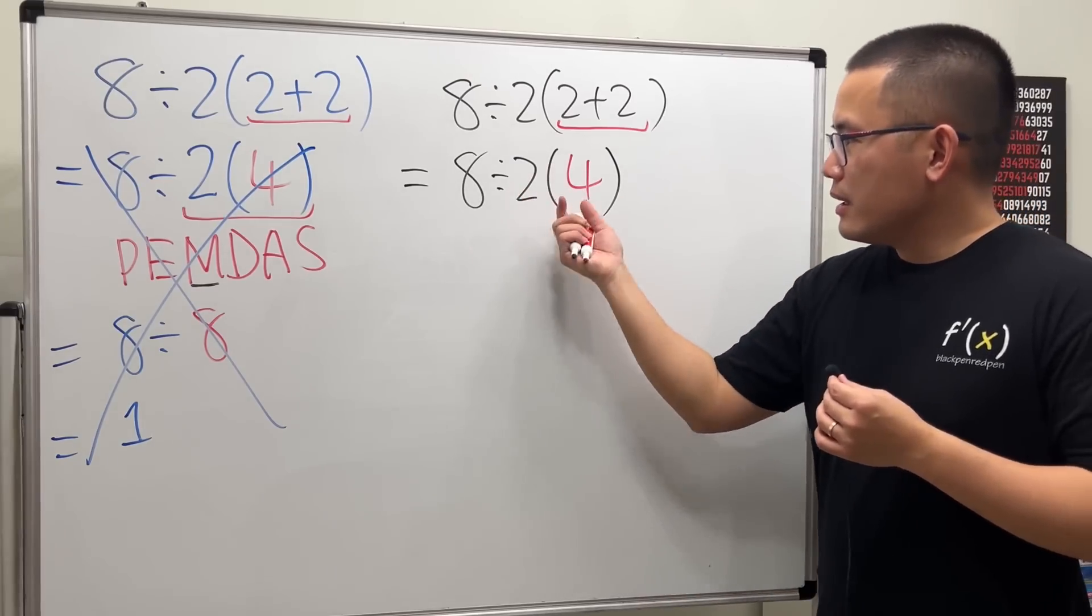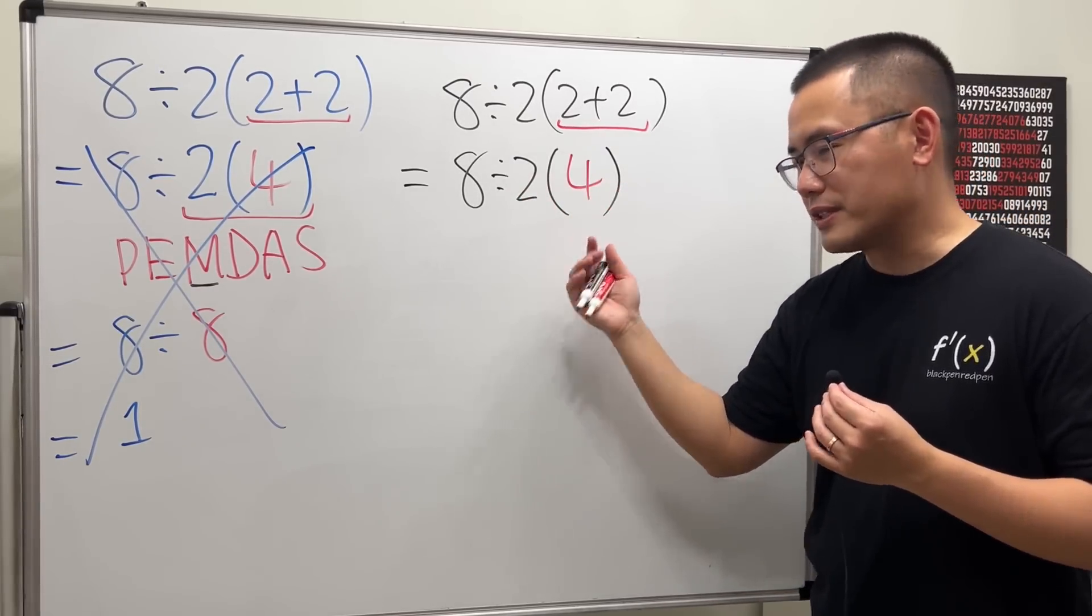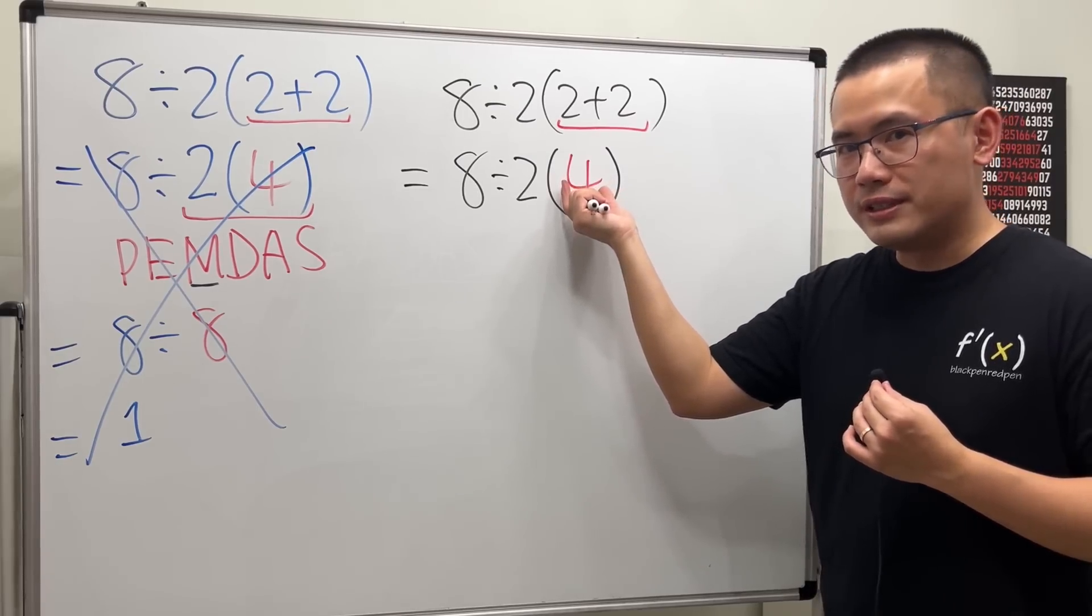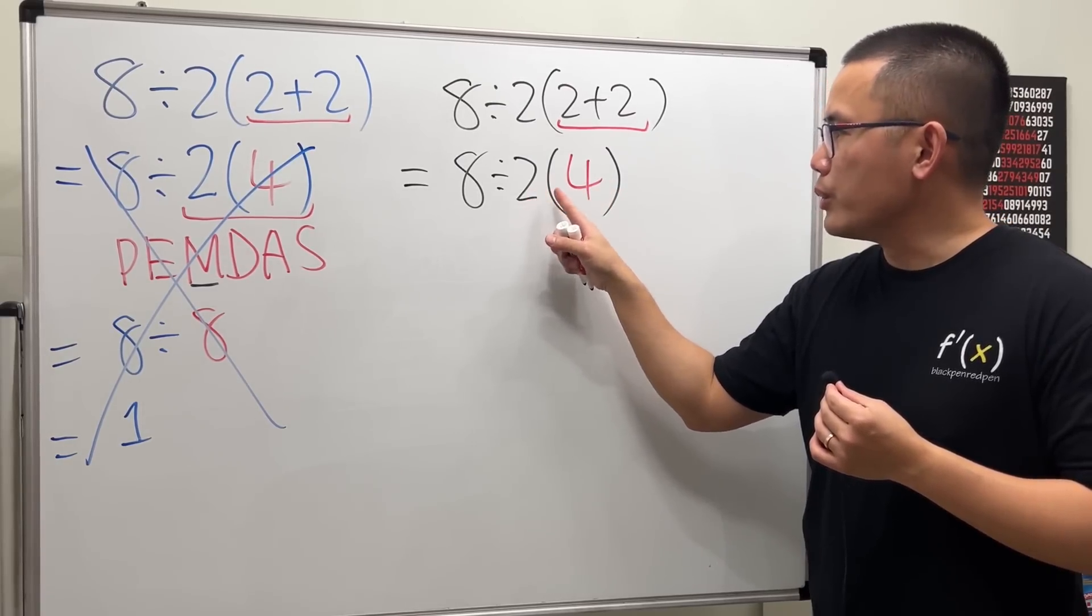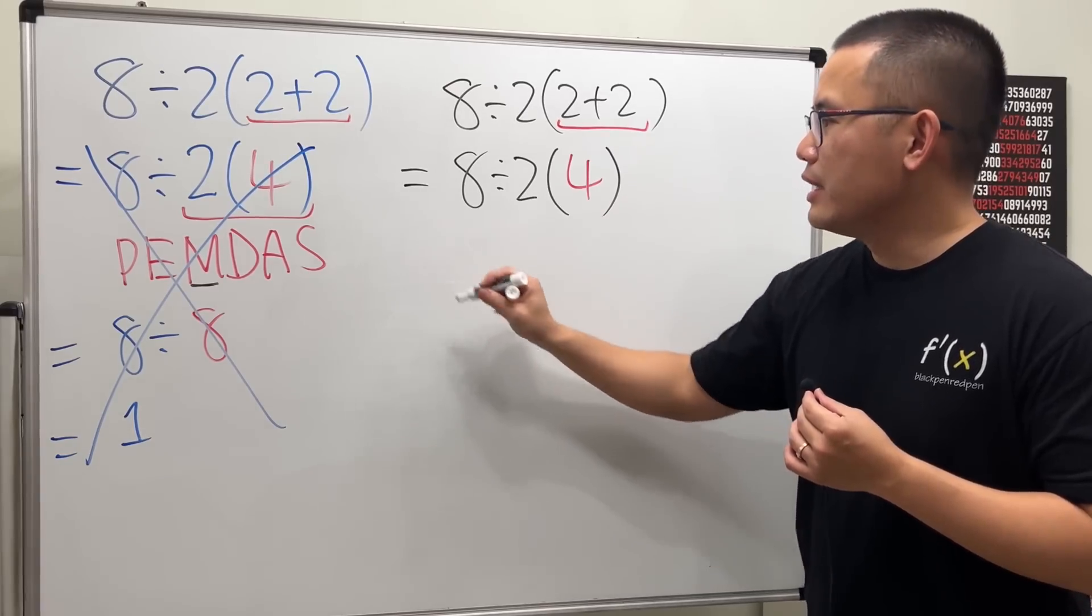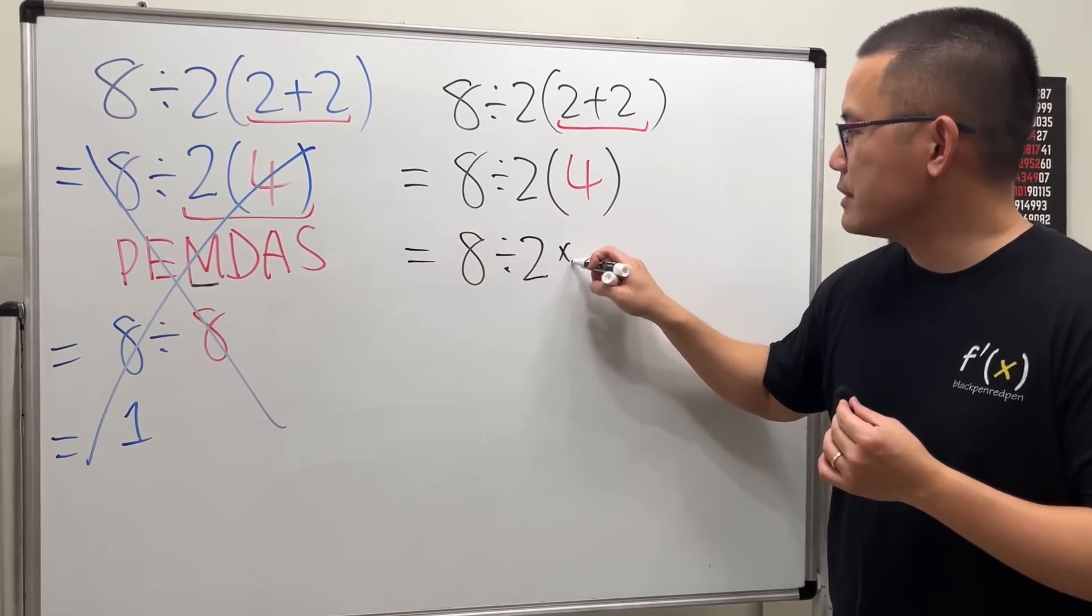Now this parentheses—there's nothing inside, right? There's 4 inside, but there's no more operations inside of the parentheses. So we look at this as 2 times 4. So if you would like, you can write this as 8 divided by 2 times 4, and we can use the classic multiplication symbol for the multiplication here.